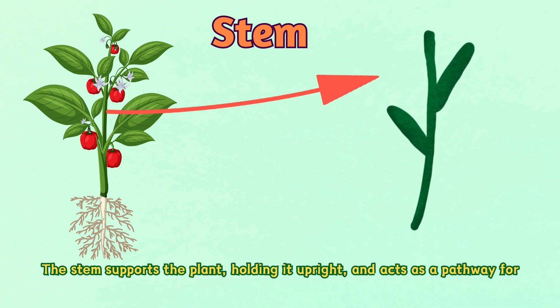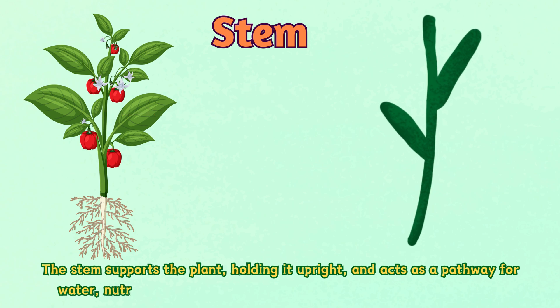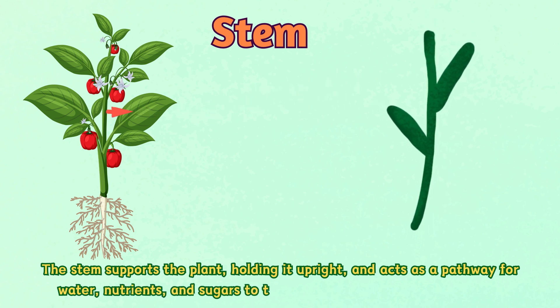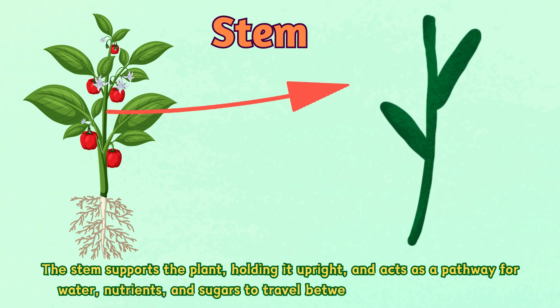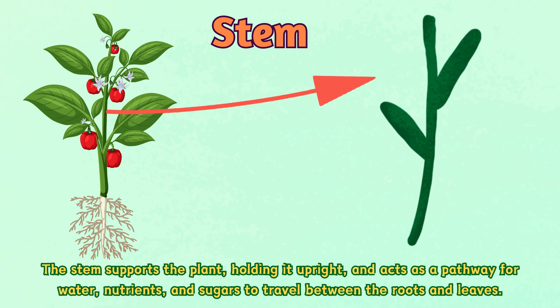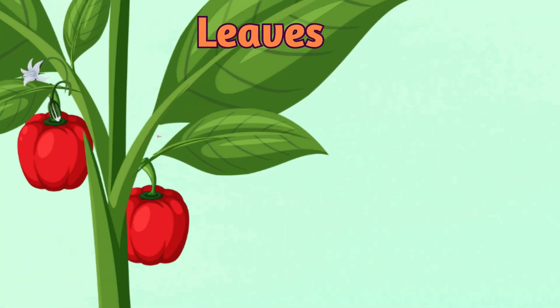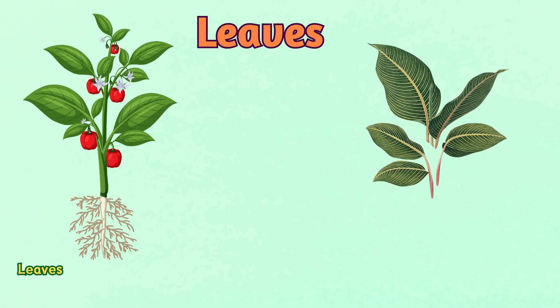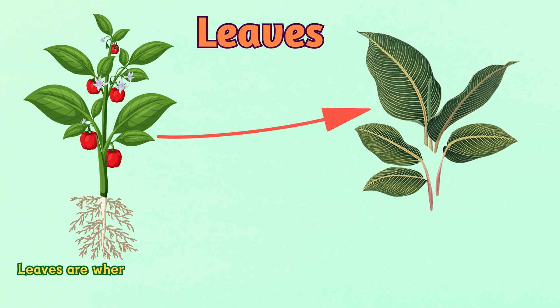Number three: leaves. Leaves are where the plant makes its food through photosynthesis.